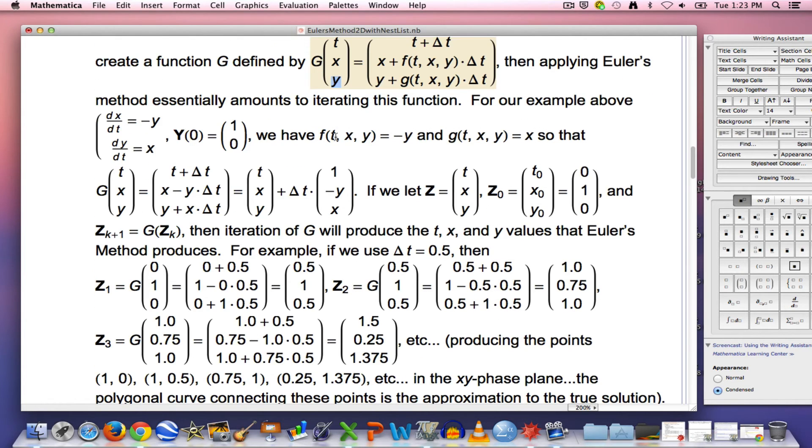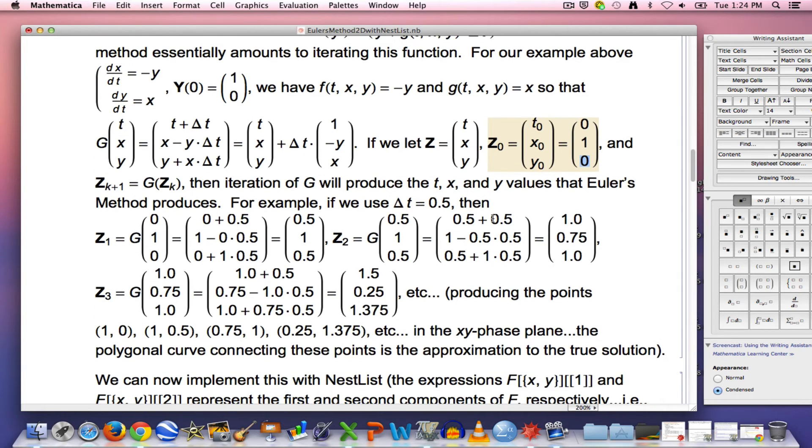For example, if little f is negative y and little g is x, which is our main example back up at the top, and we let z0 be this vector, which has the initial t value and the initial x value and the initial y value, then iterating this function is going to produce this list of vectors, this list of points, which include the t values. That, you should check, is implementing Euler's method.